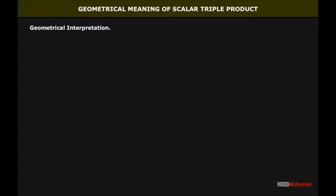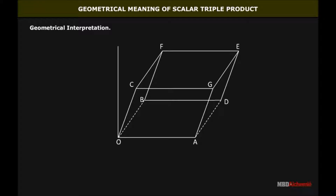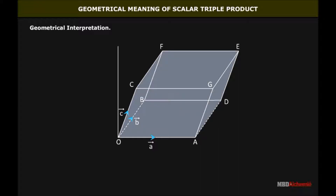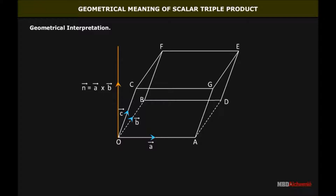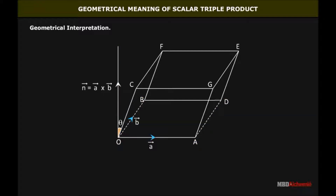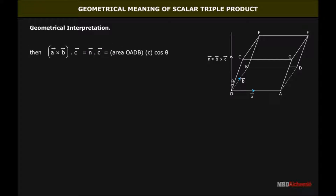Geometrical Interpretation: Consider a parallelopiped whose coterminous edges OA, OB, OC have the lengths and directions of the vectors A, B, C respectively. Let V be its volume. Now vector A cross vector B represents a vector N whose magnitude is the area of the parallelogram OADB. If theta be the angle between vector N (that is, A cross B) and vector C, then vector A cross vector B dot vector C is equal to the area of parallelogram OADB times C cos theta.